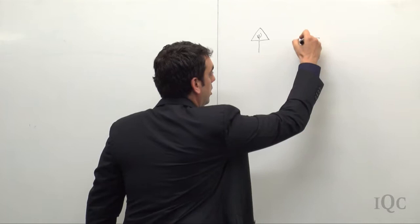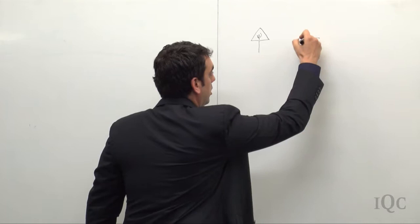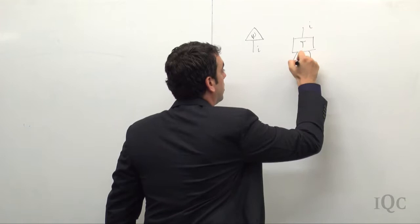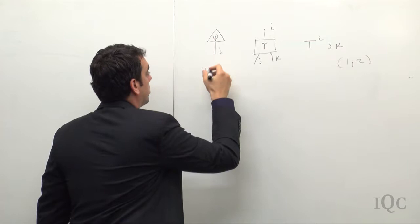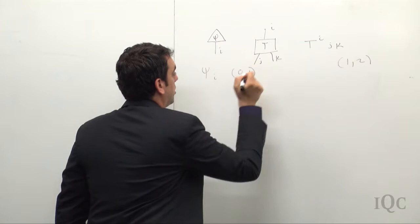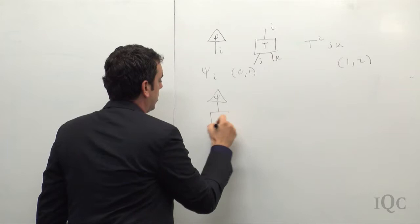We could also have a tensor labeled i, j, k. Now this tensor has one index up and two down — this is a valence 1-2. This could be a tensor psi with one down, and this is a valence 0-1. You can start to contract tensors and form networks in the evident way.